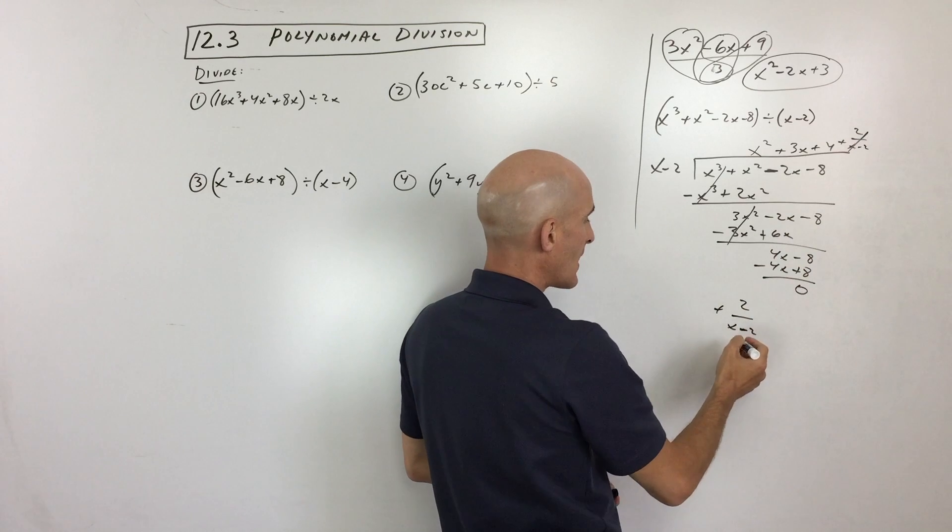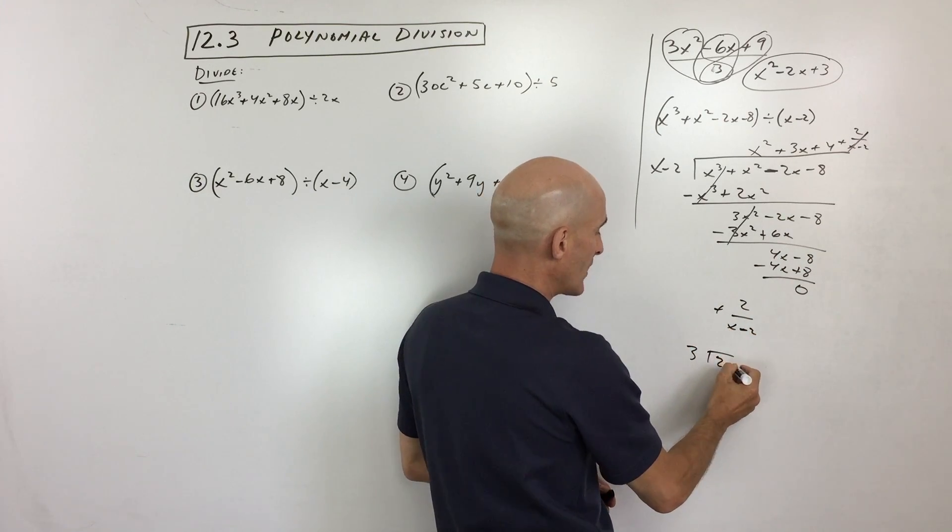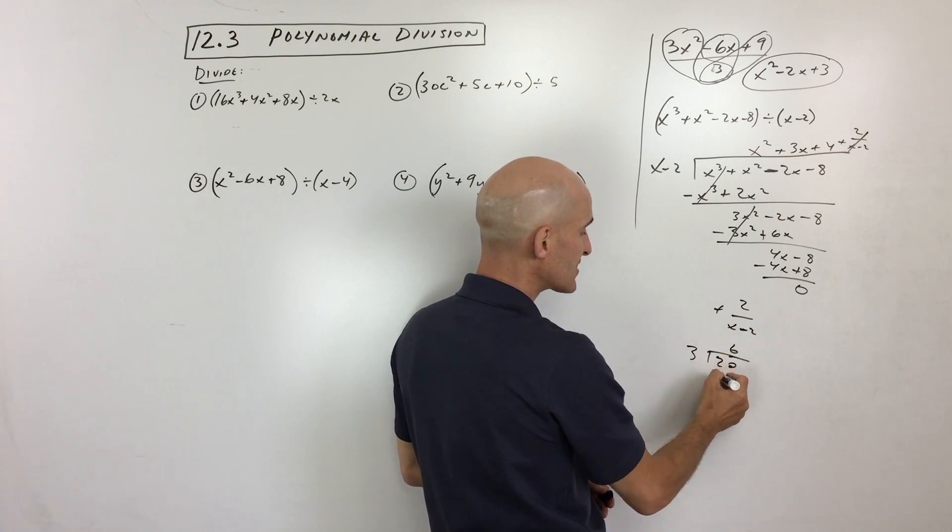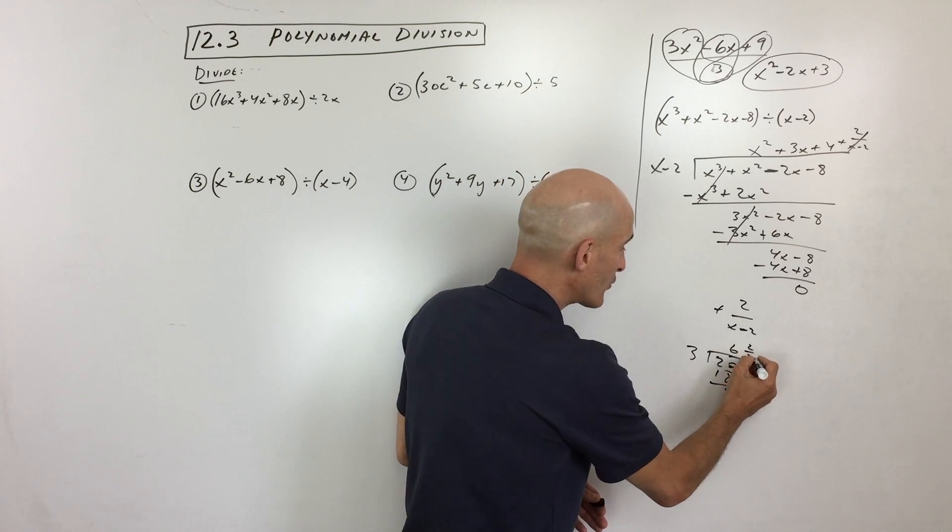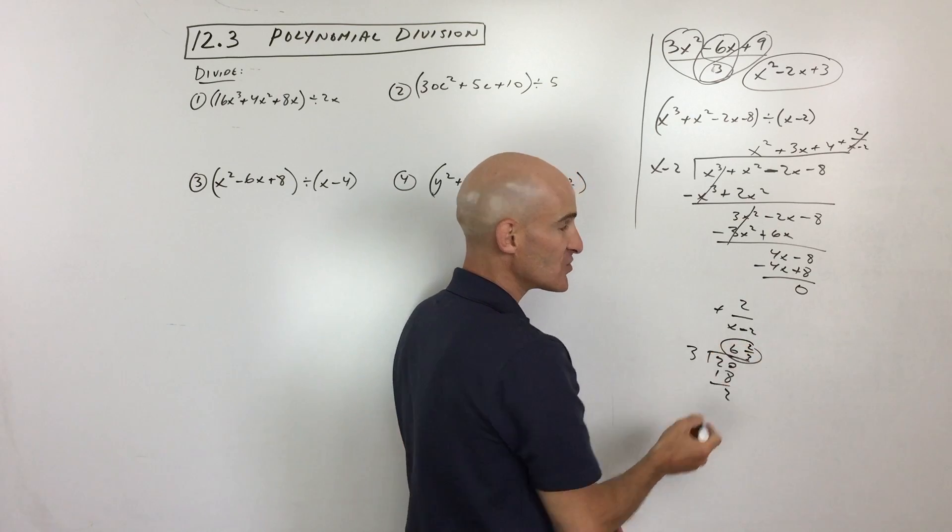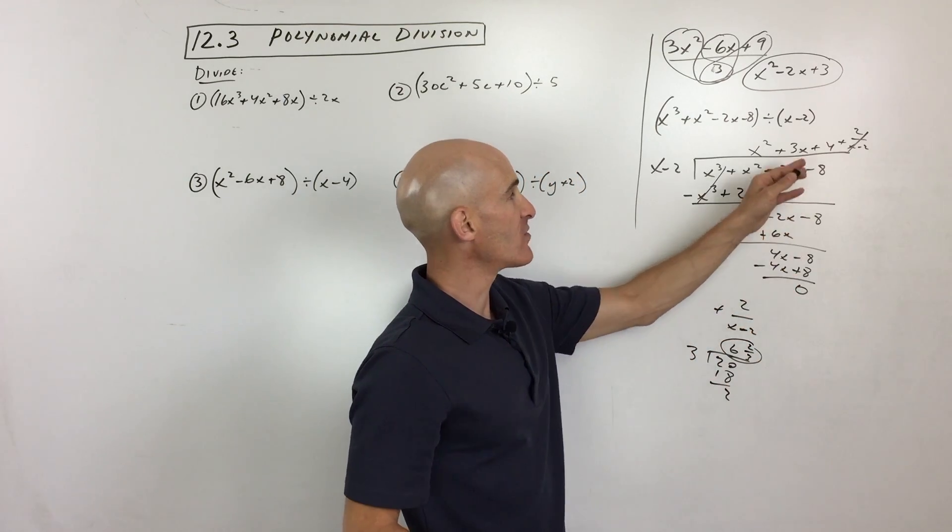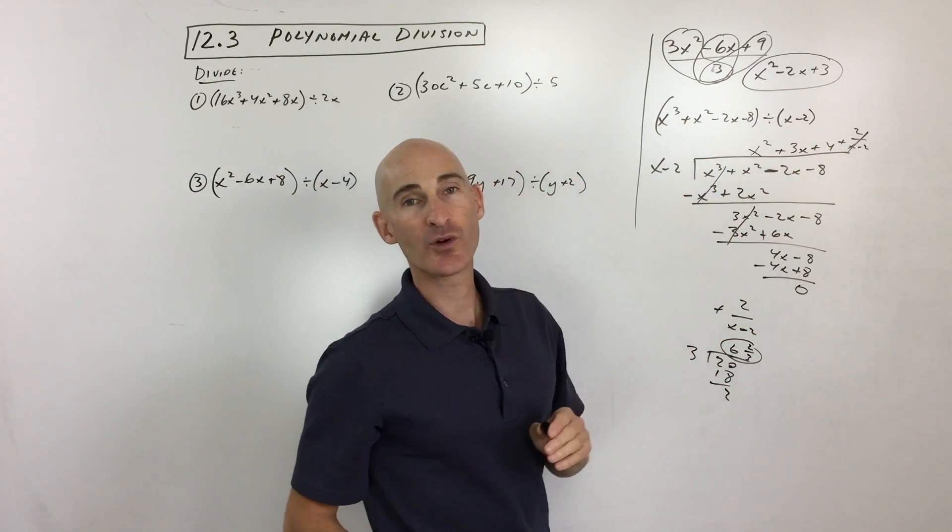So in this particular example, like, say if you had 3 goes into 20. 3 goes into 20 six times with 2 left over. What do you do with the 2? You put the remainder over the divisor. So it'd be 6 and 2 thirds. So same idea here. If there's a remainder, you're going to put the remainder over what you're dividing by.